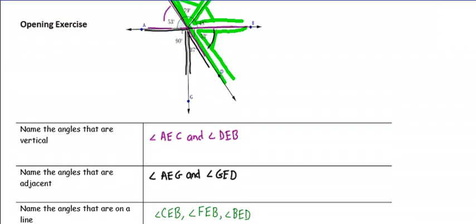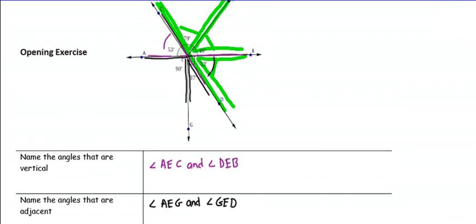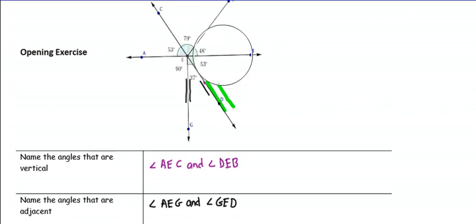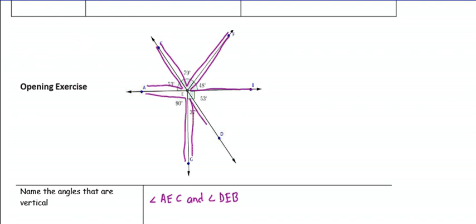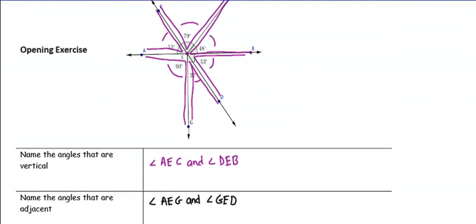Name the angles that are at a point. The angles at a point are every one of those angles. Starting around: Angle BEF, Angle FEC, Angle CEA, Angle AEG, Angle GED, and Angle DEB. All of these angles are angles at a point — the point is the vertex — and they have a sum of 360 degrees. Go ahead and write those in your notes.